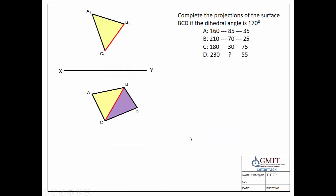We'll begin by looking at the question itself. We can see the setup for points A, B, C and D, of which we're given the coordinates, but we're missing one of the coordinates — that is the height of point D. So we have D completed in plan but we're missing point D in elevation. We're also told that the dihedral angle between the two surfaces is 170 degrees.